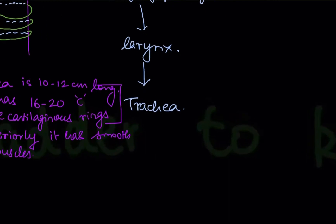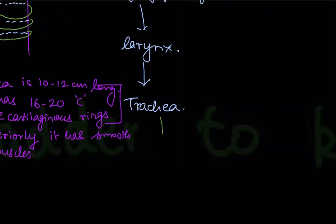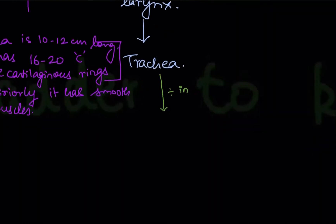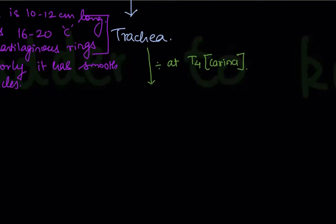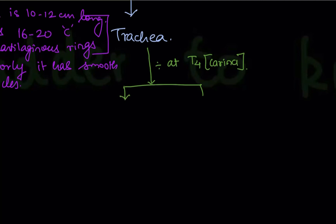The trachea further divides at T4. The point where it divides is called the carina. At the carina, the trachea divides into a right primary bronchus and a left primary bronchus.